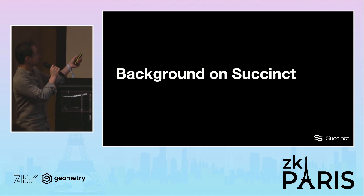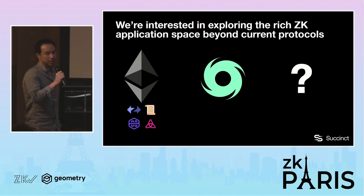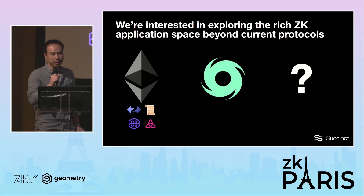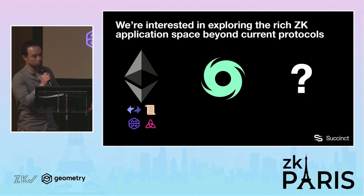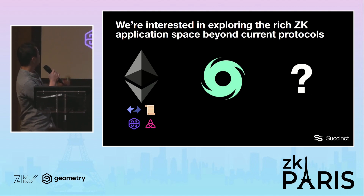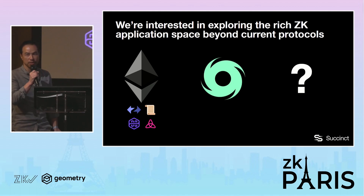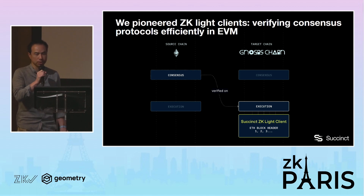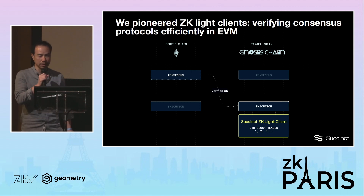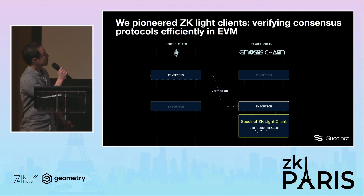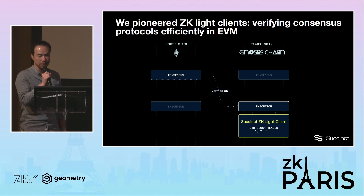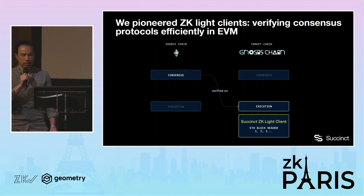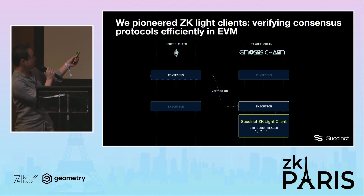A quick background on Syscynct. We're interested in exploring the ZK application space beyond the current main use cases — mostly ZK EVM and private transfers using projects like Tornado Cache. As part of that exploration, we pioneered ZK light clients. What that is: we are verifying consensus protocols efficiently in the EVM.